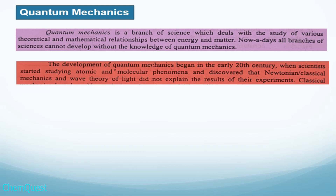Nowadays, all branches of science cannot develop without knowledge of quantum mechanics, and all branches of science must go through quantum mechanics to understand the structure of atoms and molecules. The development of quantum mechanics began in the early 20th century when scientists started studying atomic and molecular phenomena and discovered that Newtonian or classical mechanics and wave theory of light could not explain the results of their experiments.